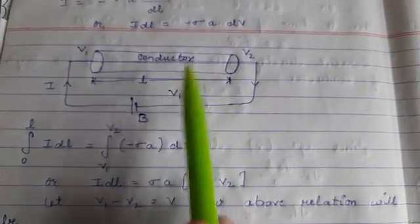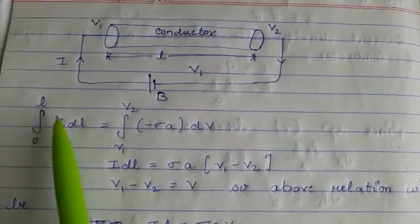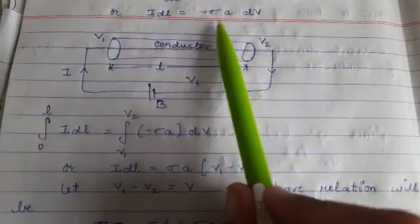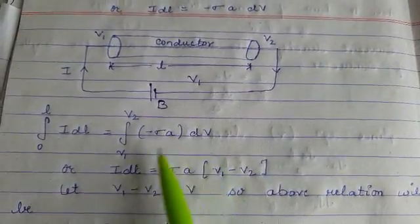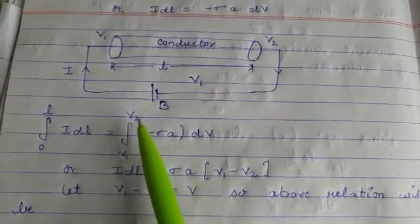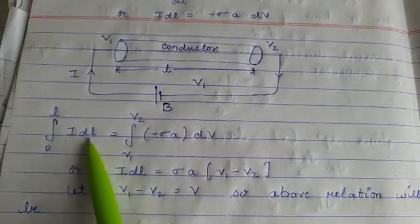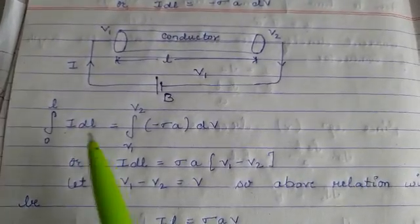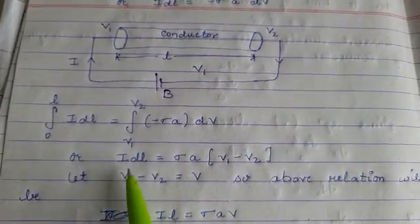...then the integral from 0 to L of I·dl equals the integral from V1 to V2 of negative sigma A dV. The limits of potential are from V1 to V2, and differential length has limits from 0 to L. So when we solve these two factors...